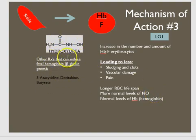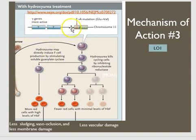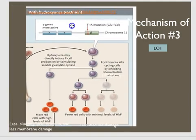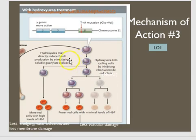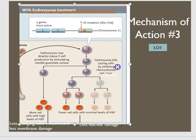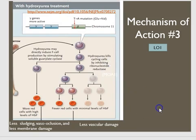Other drugs also have the ability to induce fetal hemoglobin, and those are listed here. Essentially, hydroxyurea turns on a specific promoter, which induces the F-cell phenotype through the production of more soluble guanyl cyclase. The outcome is more red blood cells with higher levels of fetal hemoglobin compared to the untreated group, resulting in less sludging, fewer vaso-occlusions, and less vascular damage.